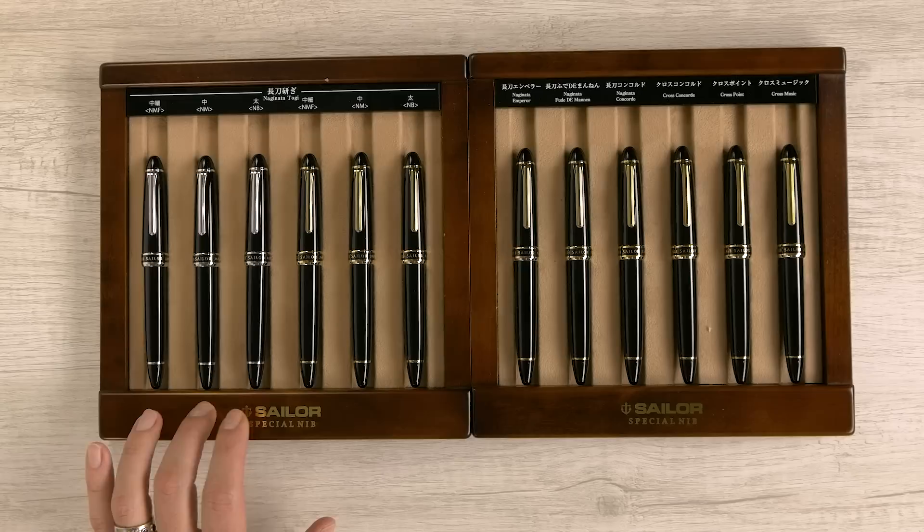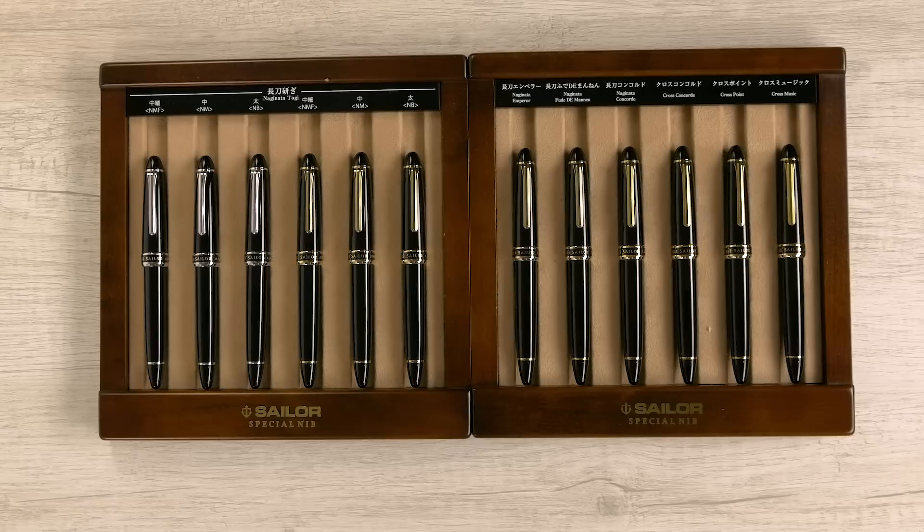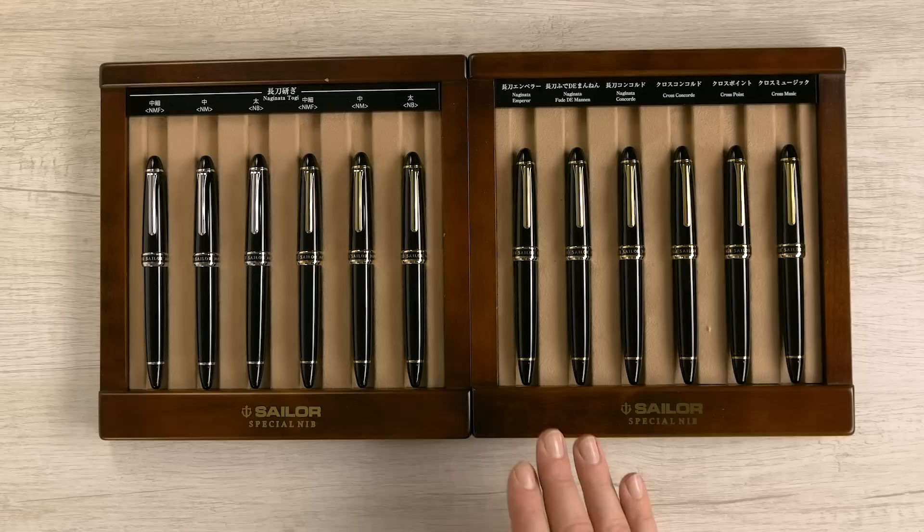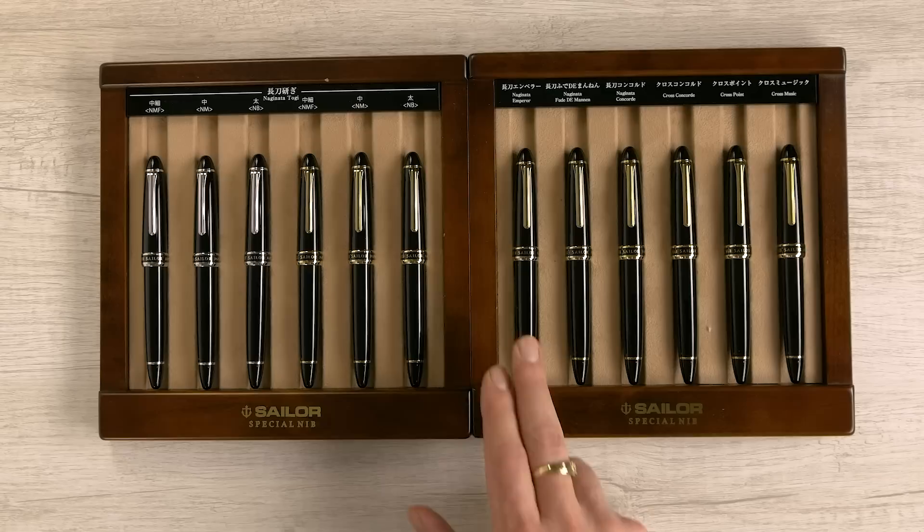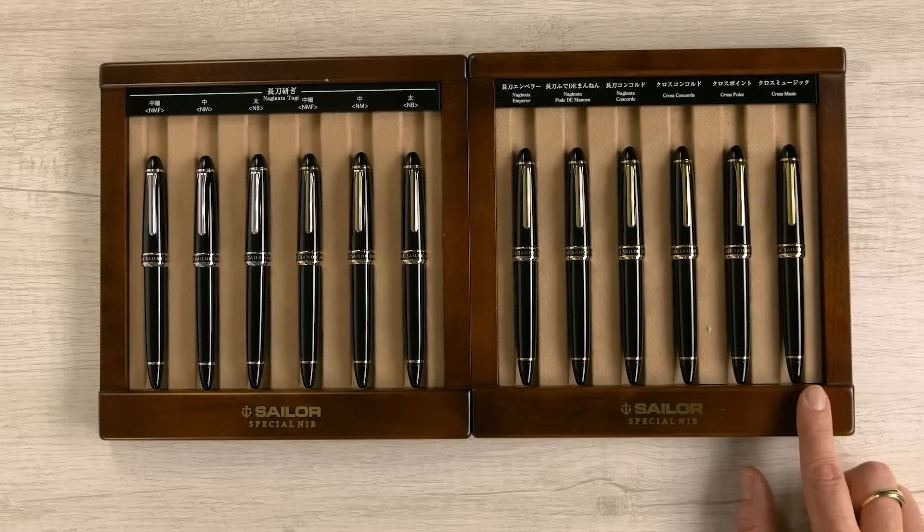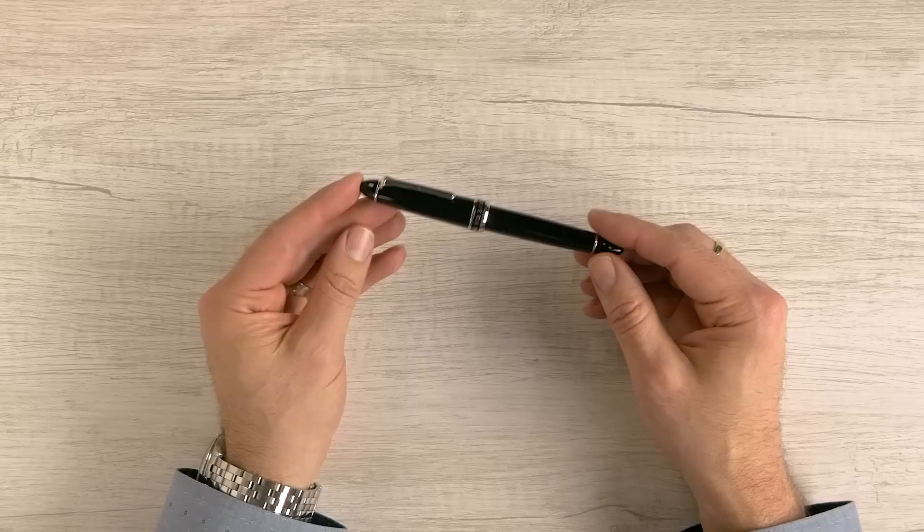But basically we have Naginata Togi and that comes in Naginata Togi medium fine, medium and broad in both gold and rhodium trim versions. If you like rhodium trim, these are the only special nibs that come in rhodium. Everything else is gold only. So we have the six Naginata Togis. We have Naginata Emperor in medium fine, medium and broad. So there are three Naginata Emperors, of which we have one here. We have the Fude, the Concord, which is the reverse of the Fude, the Cross Concord, the Cross Point and the Cross Music. So let's take a look at the pens themselves and then we'll get into some writing samples.